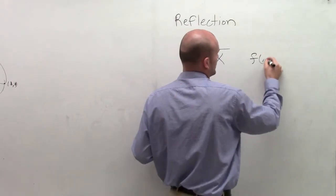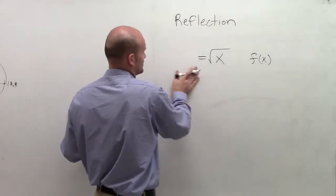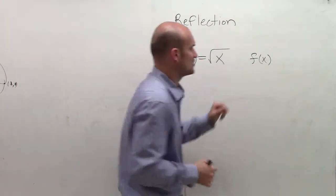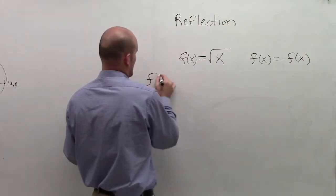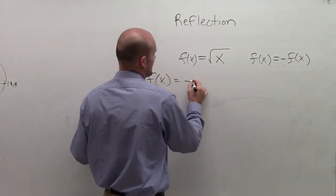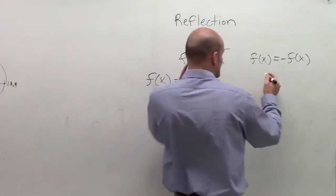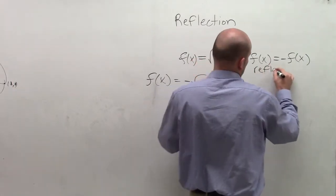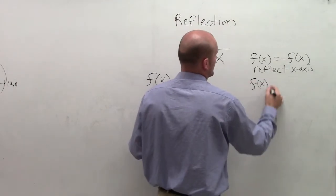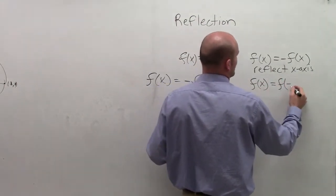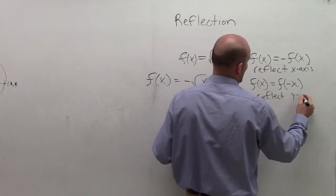There are a couple of things to remember. When we have a function — in this case f(x) equals the square root of x — and we multiply it by a negative number, like f(x) equals negative square root of x, that is going to be a reflection about the x-axis. And if we multiply by a negative inside the function, that is a reflection about the y-axis.